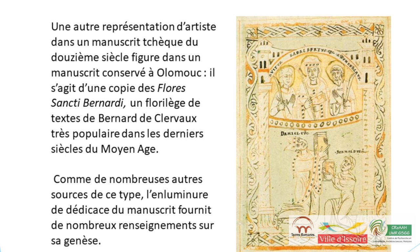À partir de ce premier constat, et à l'aide du style de l'enluminure et de l'analyse du reste du manuscrit, l'identification de l'évêque Daniel est assez facile. L'ensemble des spécialistes considère qu'il s'agit de Daniel, évêque de Prague de 1148 à 1167. Nous pouvons donc conclure que ce manuscrit a été réalisé pendant cette période, dans le diocèse de Prague, ce que confirme la position centrale de Saint Adalbert — second évêque de Prague, ayant exercé de 982 à sa mort en 997 — qui est légèrement plus grand que les deux autres saints, ce qui peut être une référence à son lien particulier avec l'évêché de Prague.